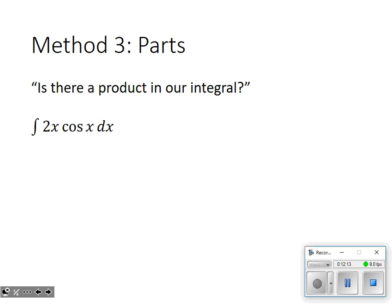If we don't find a direct anti-derivative and can't get a u-substitution to fit, we look for integration by parts. Instead of having the outside derivative of the inside times the derivative of the inside, what if we just have an arbitrary product of two functions? For example, 2x times cosine x — the derivative of cosine is in no way related to 2x, so we can't use u-substitution.